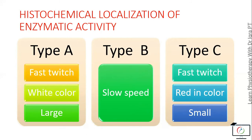Both type A and type C are fast twitch, while type B is slow speed. Type A and type C are further differentiated on the basis of color and size: type A has a white color while type C is red in color; type A is large in size while type C is small in size.